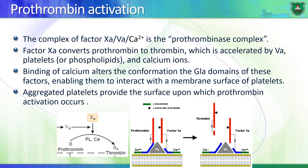The two pathways converge at the activation of factor 10. Factor 10 forms a complex with factor 5, known as the prothrombinase complex. This interaction takes place with the help of calcium ions. Similarly, prothrombin can also interact with factor 5 with the help of calcium ions. Factor 5 brings both factor 10 and prothrombin close to each other, and factor 10, which is already active, cleaves prothrombin forming the active enzyme thrombin.